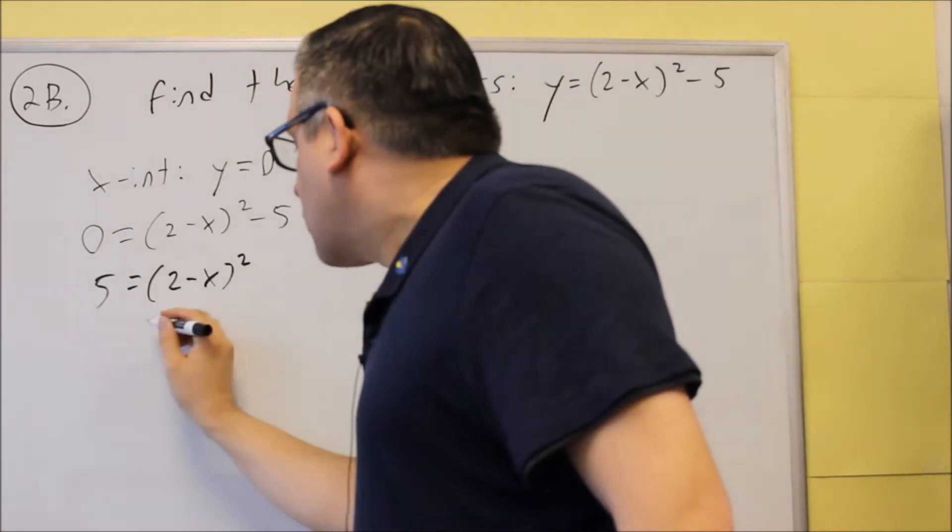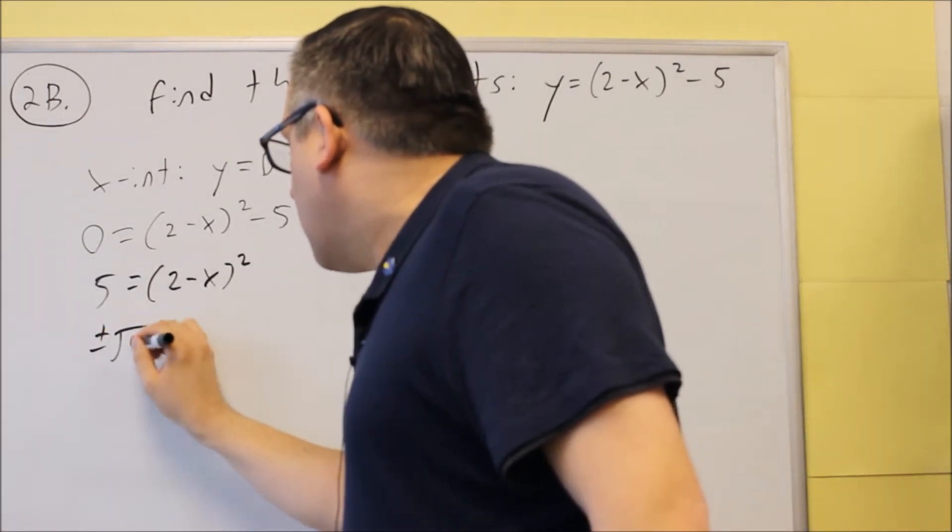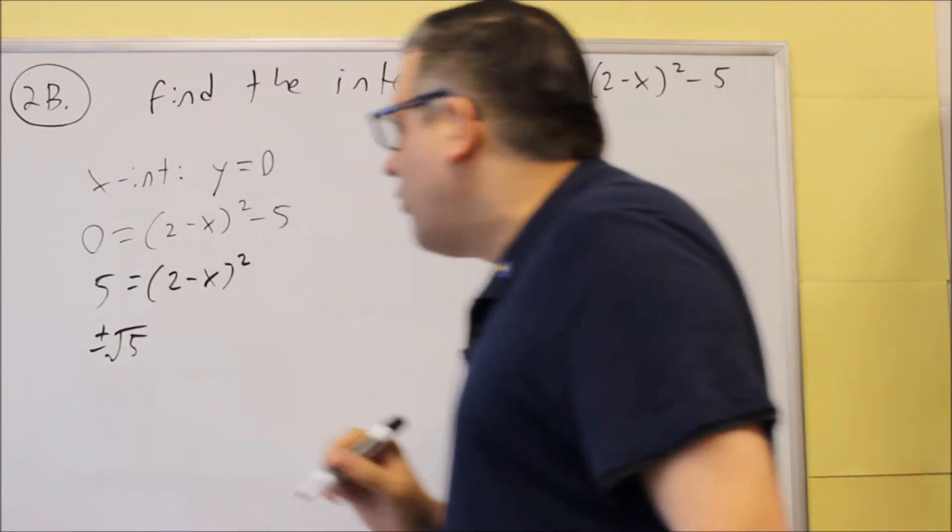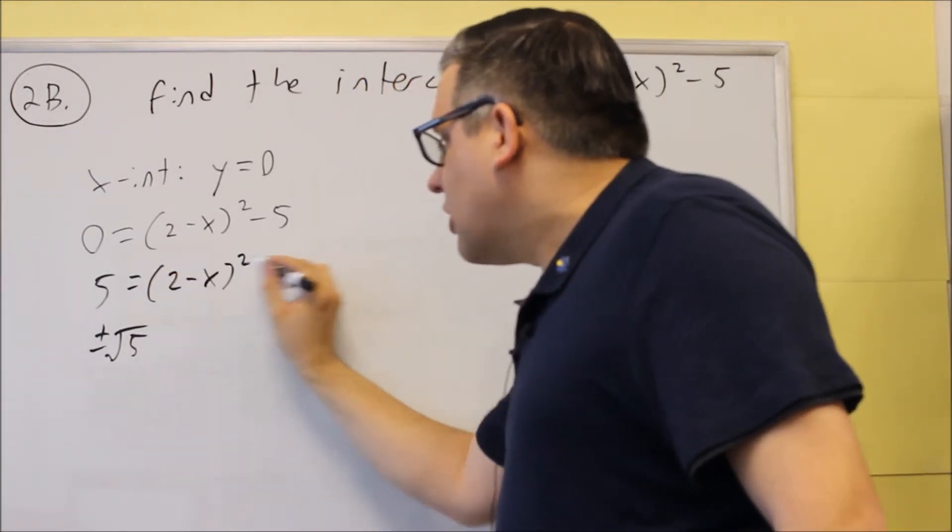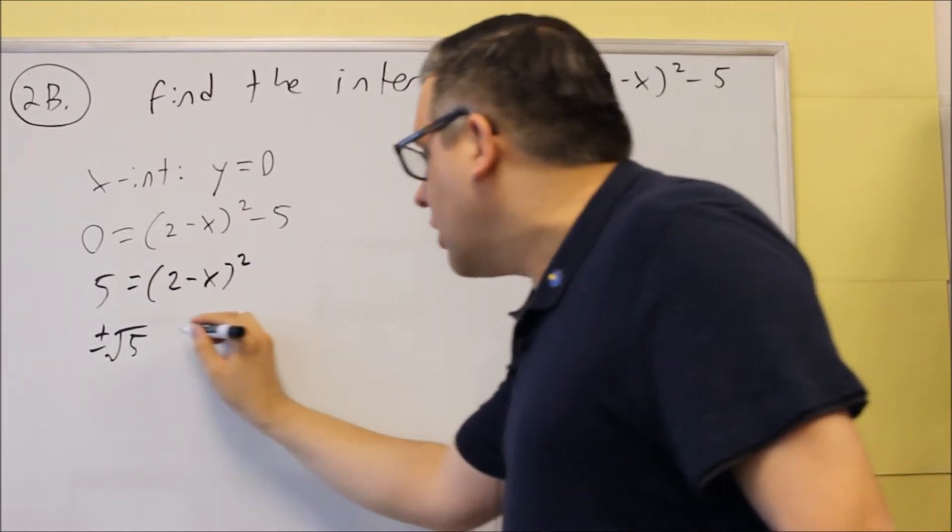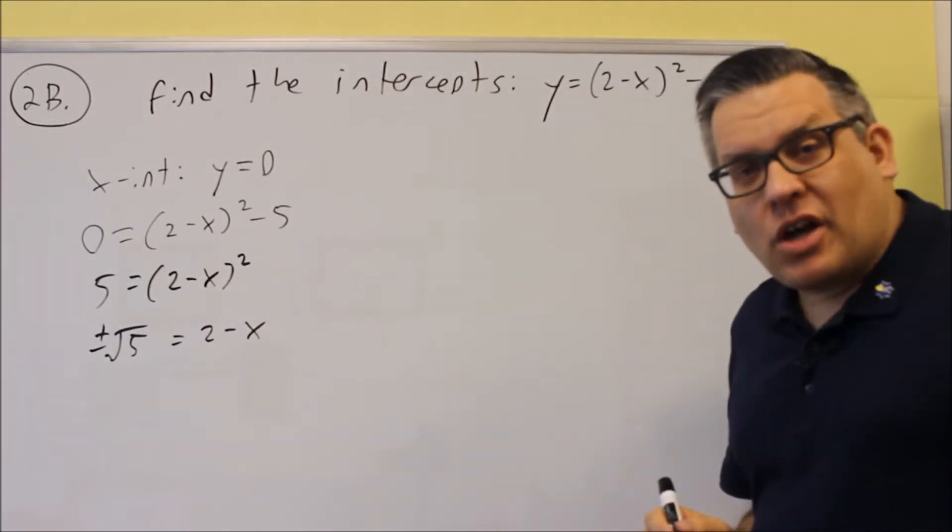And remember, when you do take the square root of both sides, you are going to get a plus or minus square root of 5. And if you take the square root of that one, the square root's going to get rid of the square here, and that's going to leave you with 2 minus x.